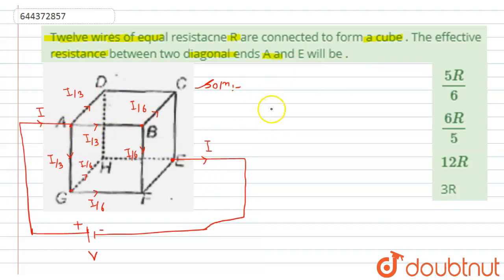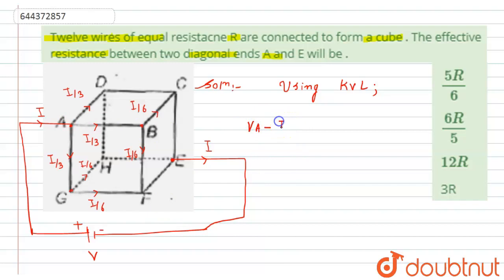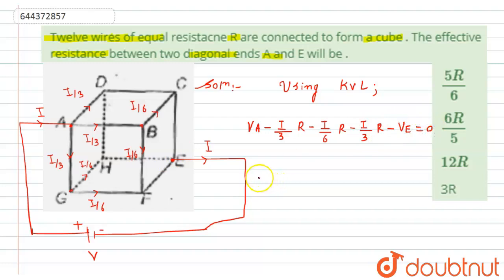To find the effective resistance between diagonal ends A and E, we will use Kirchhoff's Voltage Law (KVL). By using KVL for this loop, we can write: the potential at point A is V_A, minus i/3 times R — since each branch has resistance R — minus i/6 times R, minus i/3 times R, minus the potential at point E (V_E) equals zero.